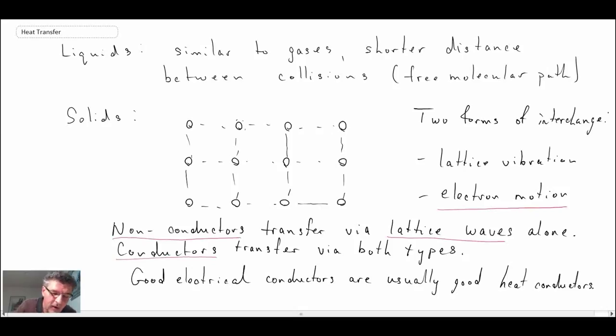The final comment here is that good electrical conductors are usually good heat conductors. If you look at things such as copper, it's a very good electrical conductor and also a very good heat conductor. Gold, platinum, things like that, they're good electrical conductors and also good heat conductors. Those are the three different situations we can have for a gas, a liquid, or a solid when we're looking at conduction.